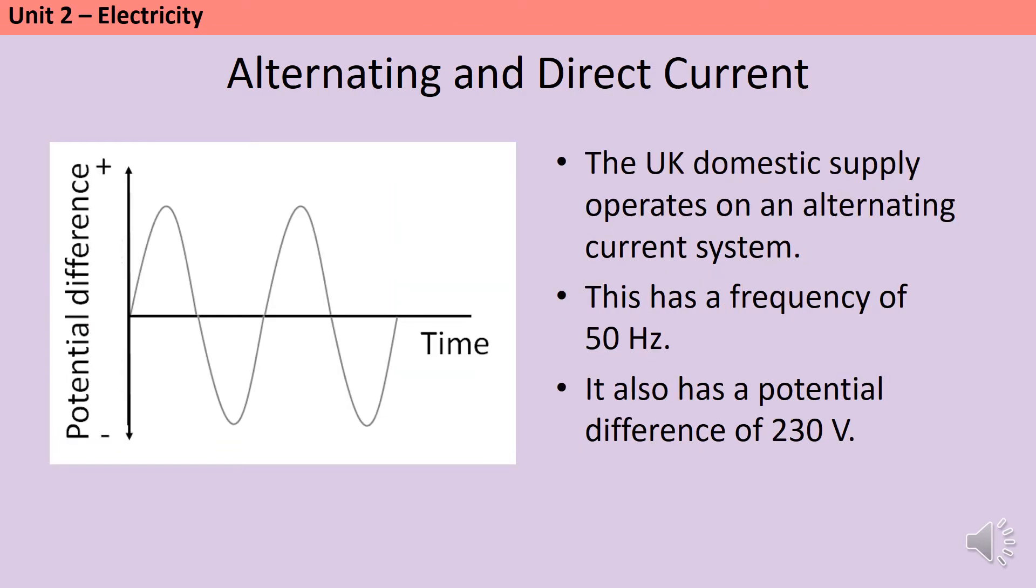The domestic supply of electricity in the UK, in other words the main supply that comes to your house, is an alternating current system. This helps to maintain power, and it also makes it easier to change the potential difference using a transformer. The domestic supply in the UK has a frequency of 50 Hz, in other words it changes direction 50 times a second. It also has a potential difference of around 230 volts.